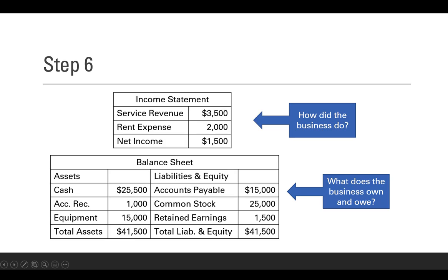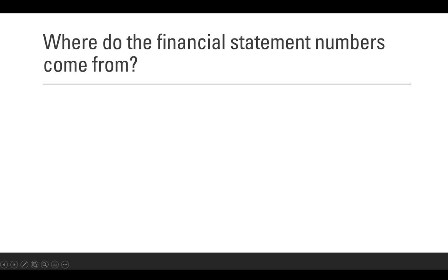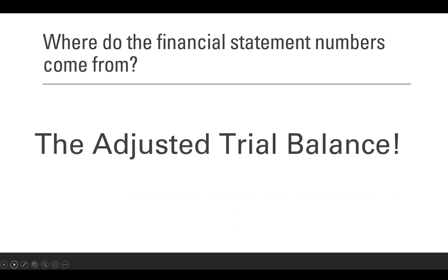Let's take a quick look at our financial statements. The income statement is revenues minus expenses equals net income — that shows us how we did. Then our balance sheet, which balances — those numbers are equal at 41,500. It shows us what we own: cash, accounts receivable, equipment; and what we owe: accounts payable. The rest belongs to the owners as retained earnings. Retained earnings is the income the company had that's been retained in the business. Where do the financial statement numbers come from? The adjusted trial balance.